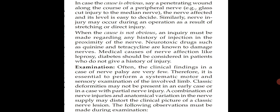If there is an obvious cause such as a penetrating wound along the course of a peripheral nerve — for example, glass injury to the median nerve — the nerve affected and its level are easy to decide. Nerve injury may also occur during an operation due to stretching or direct injury. When the cause is not obvious, inquiry must be made regarding any history of injection near the nerve. Neurotoxic drugs such as quinine and tetracycline are known to damage nerves. Medical causes like leprosy and diabetes should be considered in patients without a history of injury.